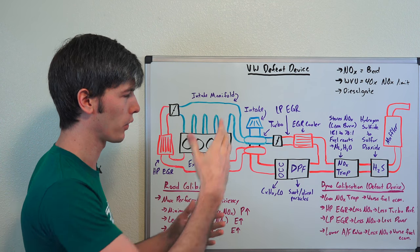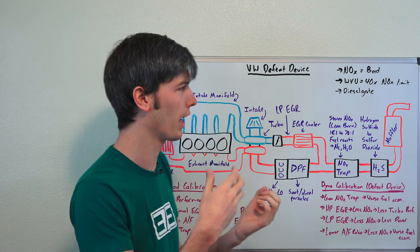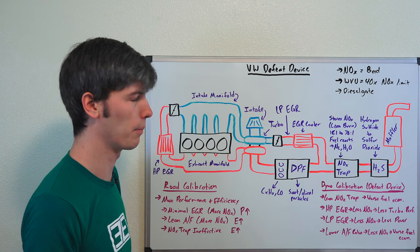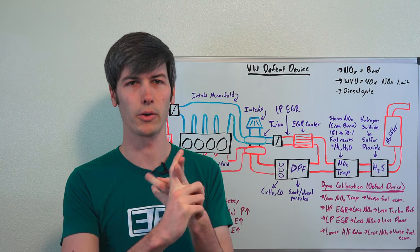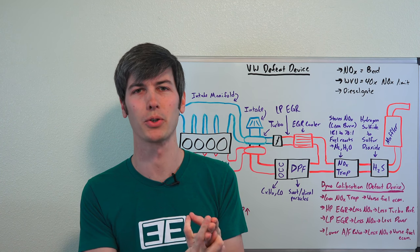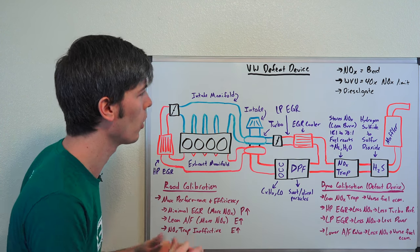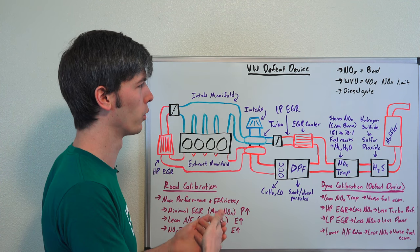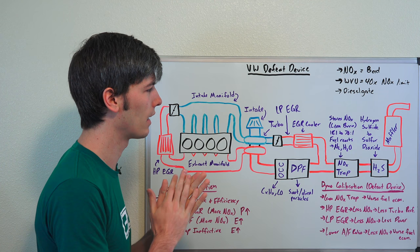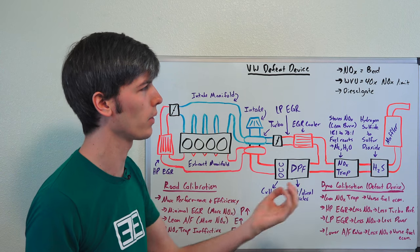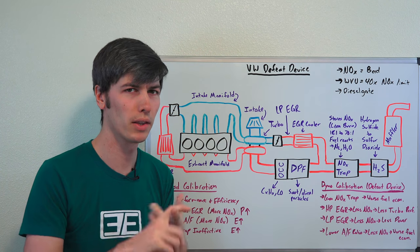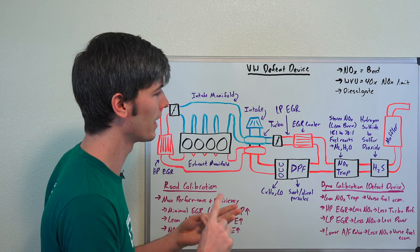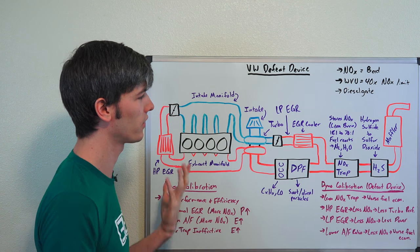So this all goes back to laws in America that say you shouldn't emit lots of nitrogen oxide emissions because these are bad. They cause respiratory illnesses, create smog, and cause tens of thousands of premature deaths annually around the globe. Basically, nitrogen oxides are bad. So we have rules that prevent them, and Volkswagen created this device in order to get around the US laws because they wanted the performance and efficiency of diesel engines but didn't want to sacrifice anything in the name of emissions. So they created this defeat device to get around it.